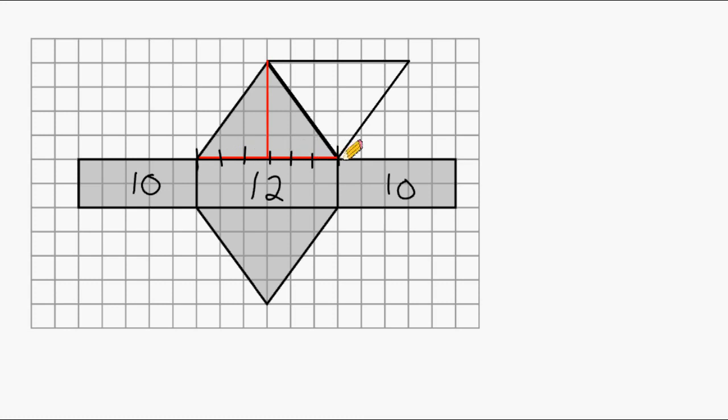So the base of this parallelogram is 6 and the height of this parallelogram is 4. So we have a 6 by 4 parallelogram, and to find the area of any parallelogram, you just multiply its base times its height. And 6 times 4 is 24.